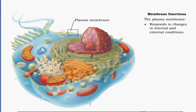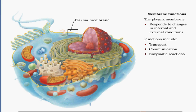The plasma membrane plays several vital roles for the cell. Membrane proteins perform many of its functions. They include transport of fluids and chemicals in and out of the cell, communication between cells or the external environment, enzymatic reactions, cell identification, and the formation of cell junctions.